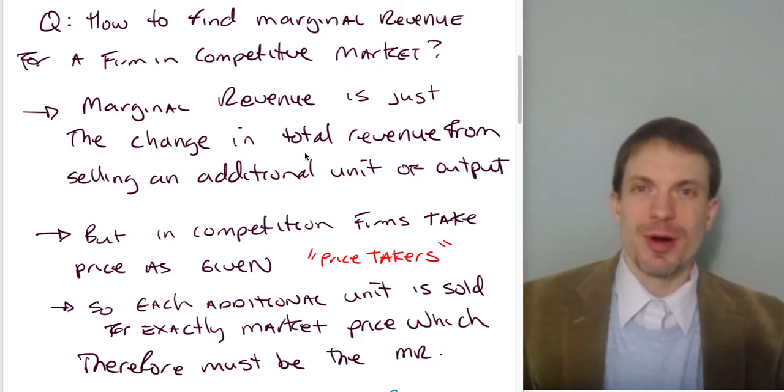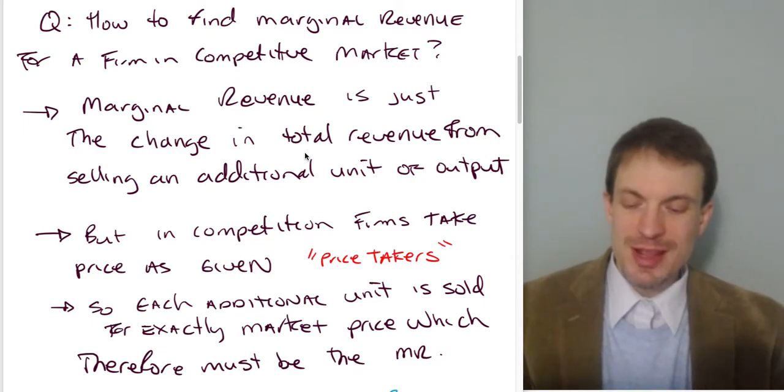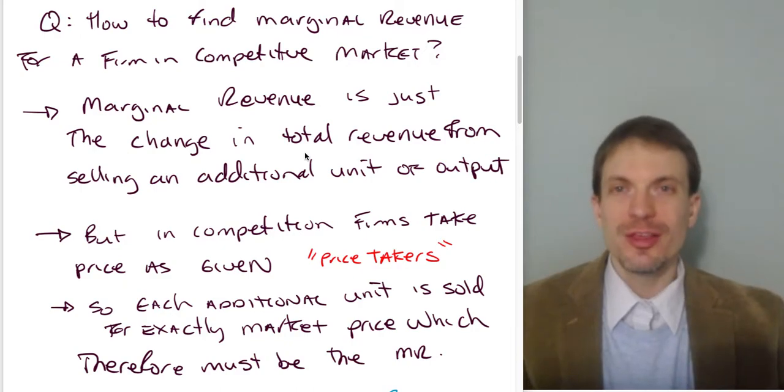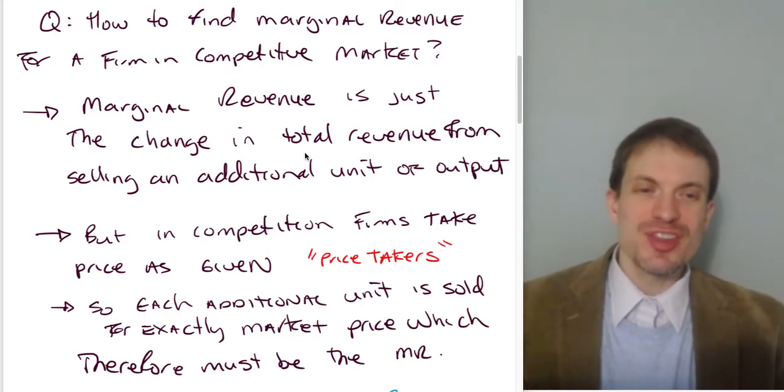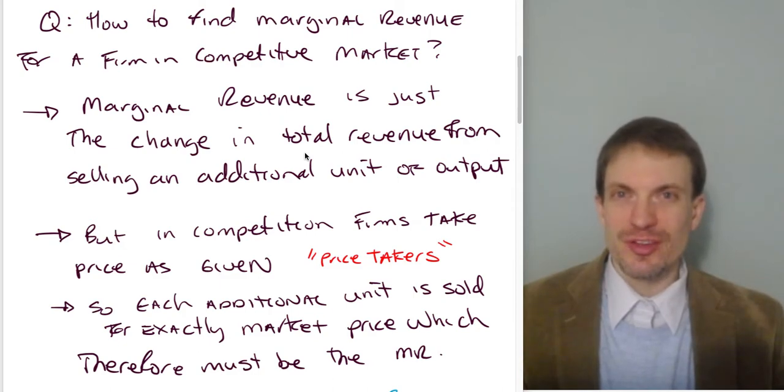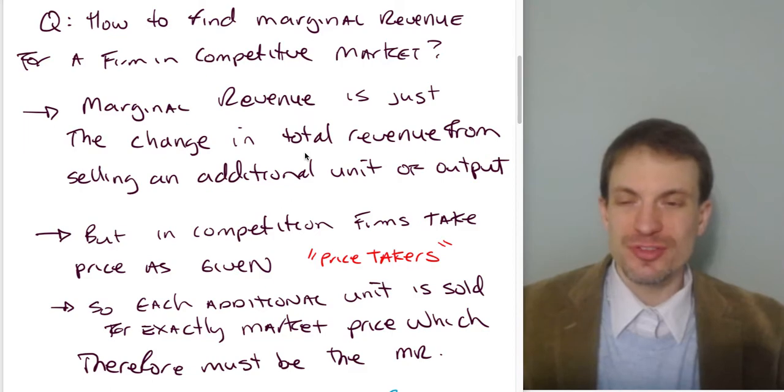But in a perfectly competitive market, you're taking the prices given, meaning every additional unit I sell is going to go for exactly the market price. If I were to change that price based on the number of units I'd sell, then I'd have some influence on the market price. I'd no longer be a price taker. That would violate our assumption for perfect competition.